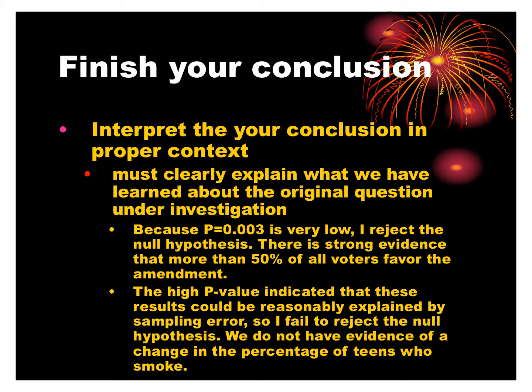We have to interpret our conclusion and p-value in context, clearly explaining what we've learned about the original question. For example: 'Because the p-value of .003 is very low, I reject the null hypothesis — there is strong evidence that more than 50% of all voters favor the amendment.' Or: 'The high p-value indicates results could be explained by sampling error, so I fail to reject — we don't have evidence of a change in the percentage of teens who smoke.'